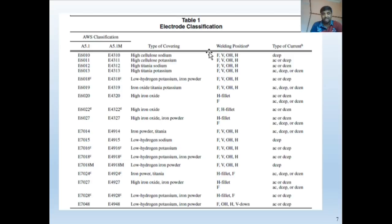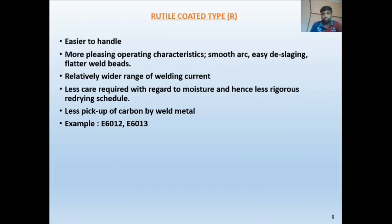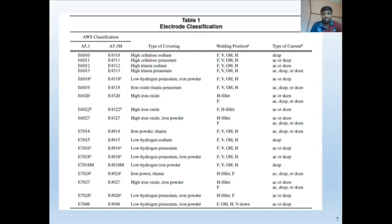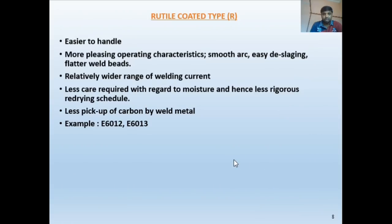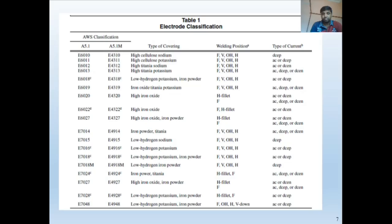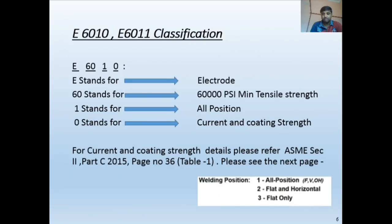For E6010, the welding positions are flat, vertical, overhead, and horizontal — that is why '1' means all positions. The current type for this electrode is DC EP. This classification system is per ASME Section II Part C for SMAW electrodes.